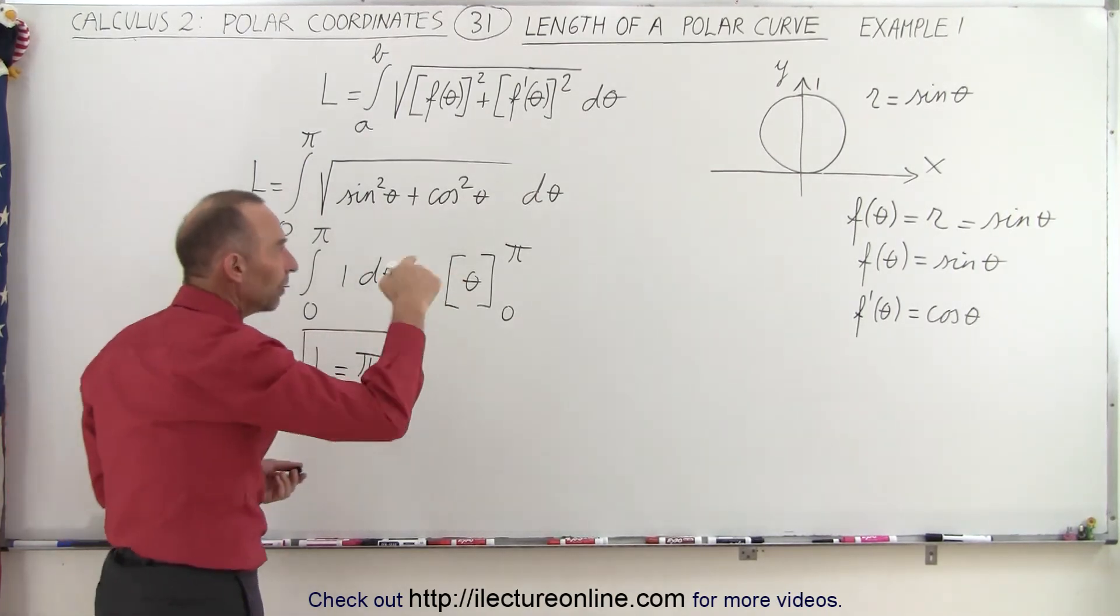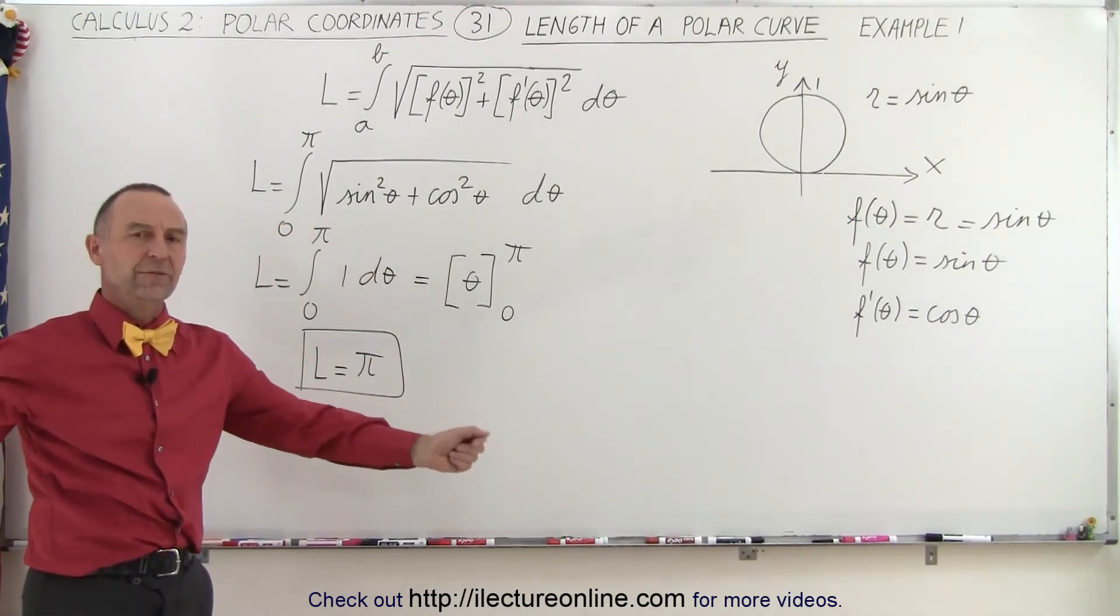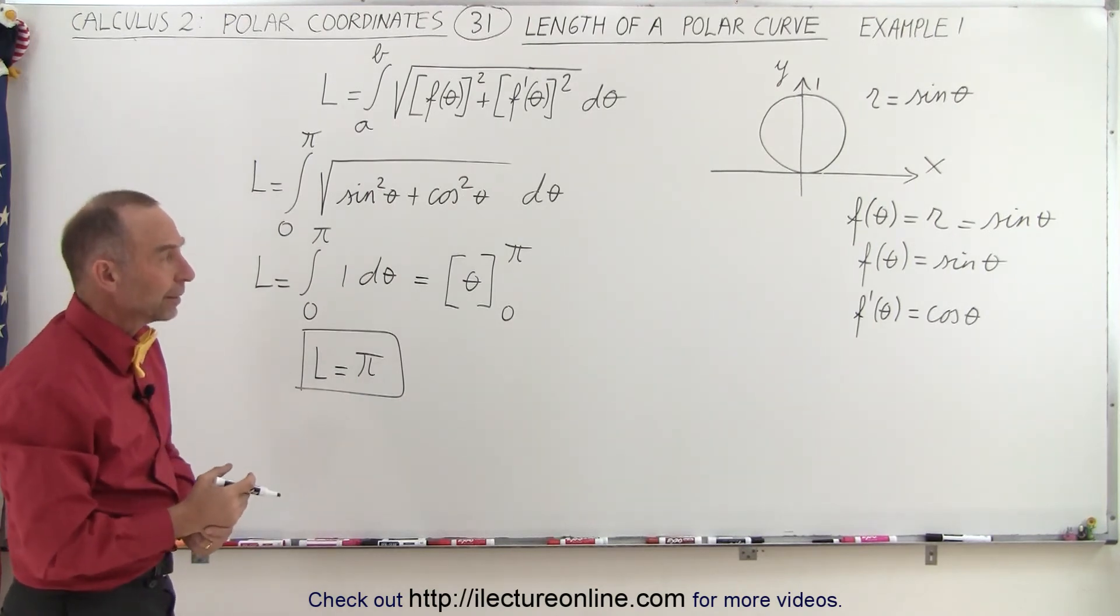In other words, the circumference of that circle is equal to pi. Now you say, wait a minute, isn't the circumference of a circle equal to two pi r? And the answer is yes.